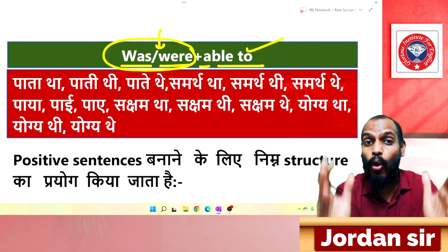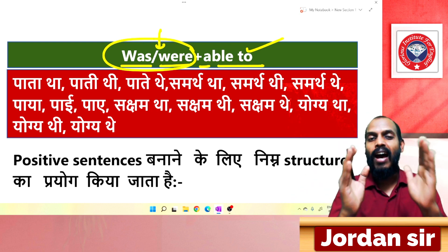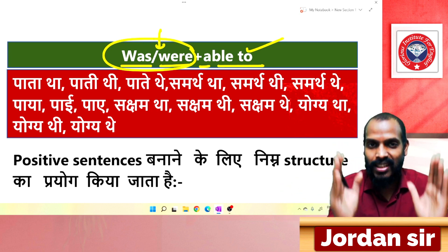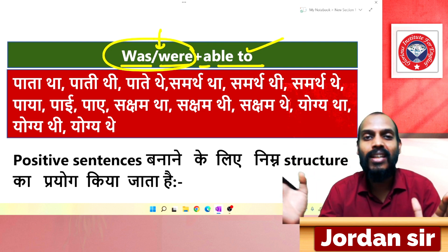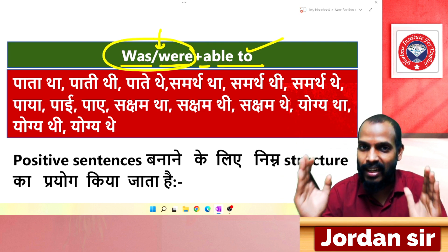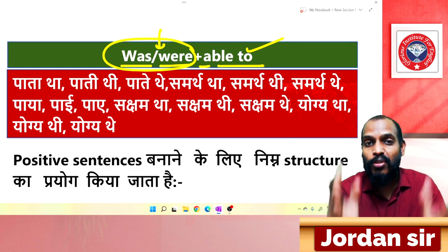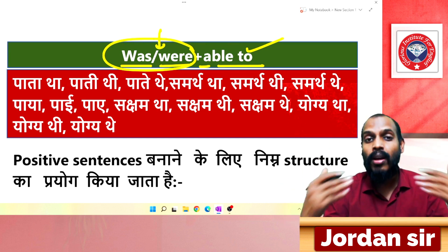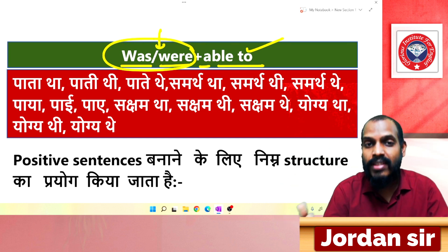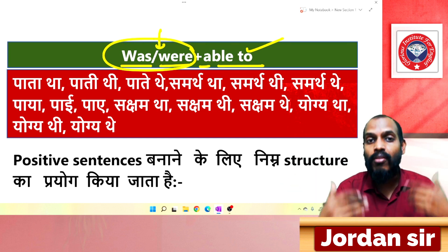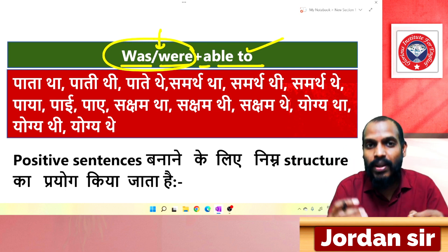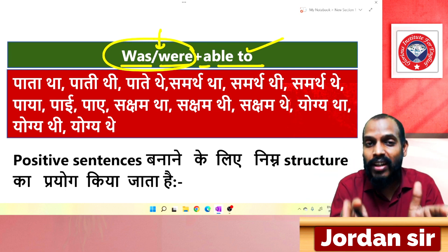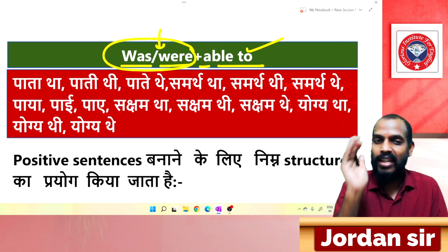'Were' is used with plural subjects. Plural subjects include: you, we, they, these, those, people, children, boys, girls, friends. So whenever we talk about a plural subject, we use 'were'.